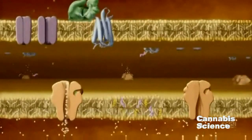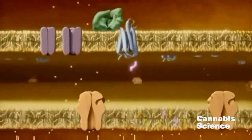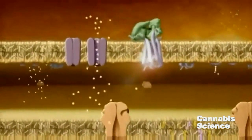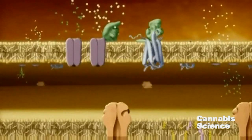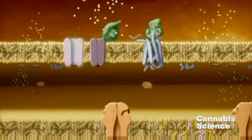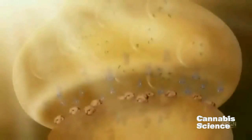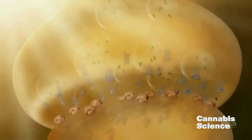This calcium buildup causes the synthesis and release of endocannabinoids from membrane lipids. Diffusing across the synaptic cleft, the endocannabinoids bind to the CB1 receptor, activating the G-protein. Activation influences ion flow, resulting in suppression of pre-synaptic neurotransmitter release. Endocannabinoids are subsequently taken back into the cell and enzymatically degraded.